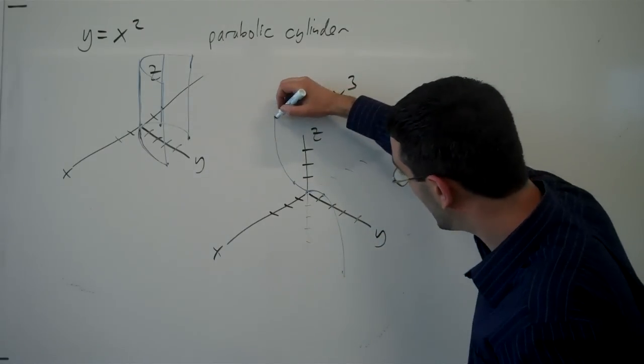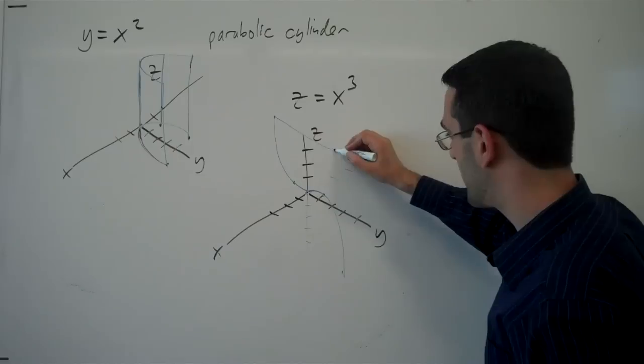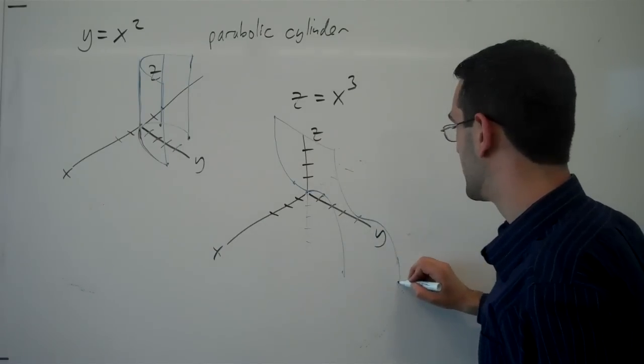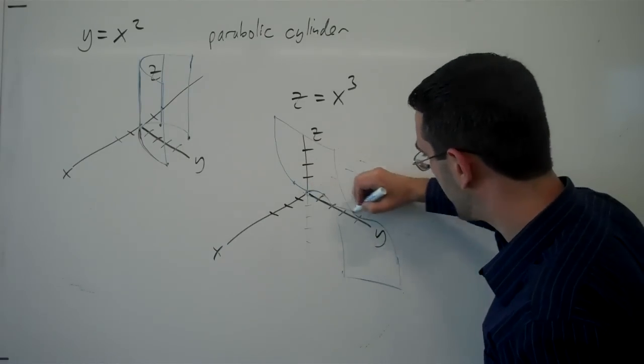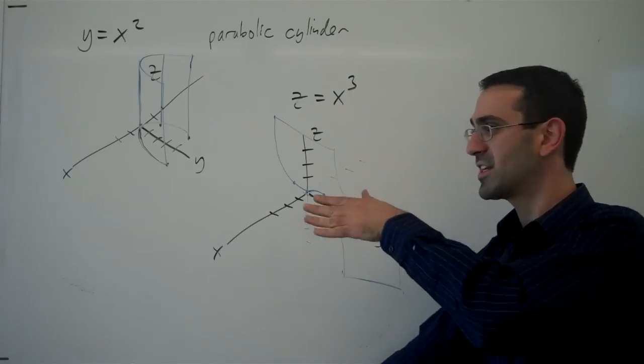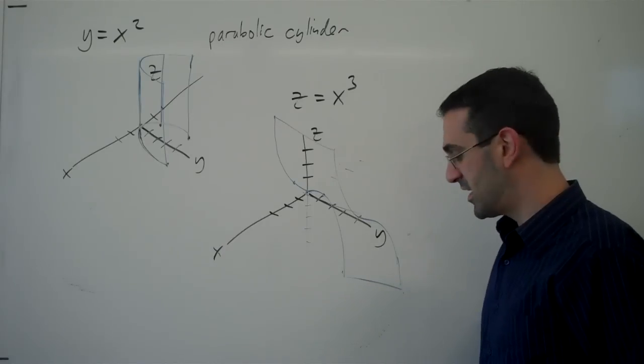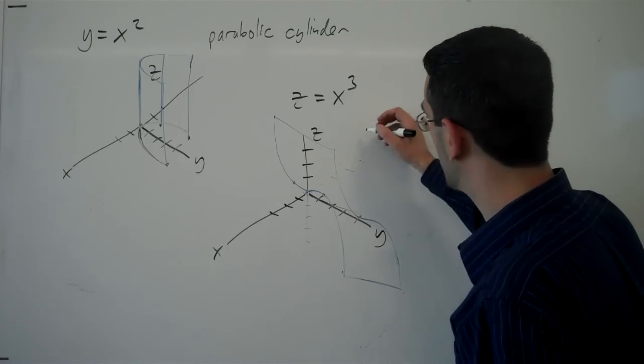But then that can extend for all values of y. So if we sort of imagine this coming out a little ways, curves down like that, it's kind of hard to see what's going on here. But we have that cubic shape extending for all values of y. This would be a cubic cylinder.